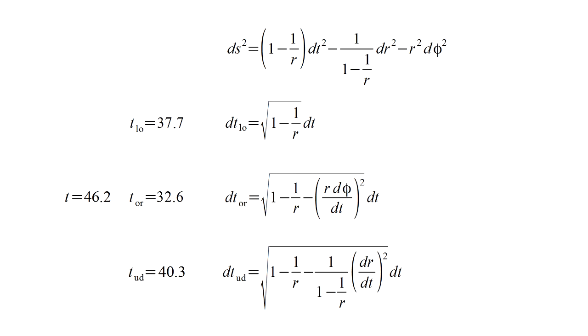The bookkeeper measured the experiment lasting 46.2 seconds. The local observer should measure a factor of square root 1 minus 1 over 3, or about 82 percent, times the bookkeeper's 46.2 seconds, which is indeed the 37.7 seconds she measures.